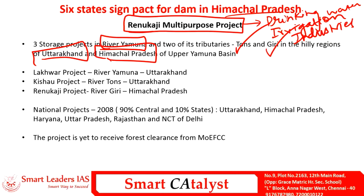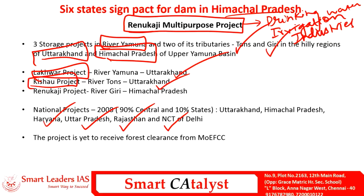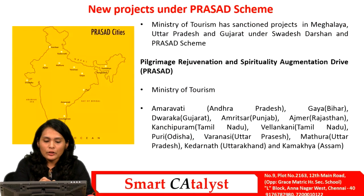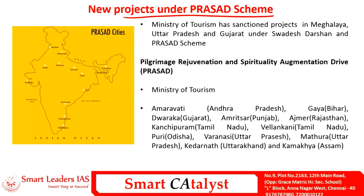Apart from Uttarakhand and Himachal Pradesh, other states involved in the project include all states where River Yamuna flows, including Haryana, Uttar Pradesh, Rajasthan, and the National Capital Territory of Delhi. Three important sub-projects are: the Lakhwar Project on River Yamuna in Uttarakhand, the Kishau Project on River Tons in Uttarakhand, and the Renuka Ji Project on River Giri in Himachal Pradesh. However, this multi-purpose project still needs to receive environmental clearance from the Ministry of Environment, Forest and Climate Change, and forest clearance is yet to be granted.